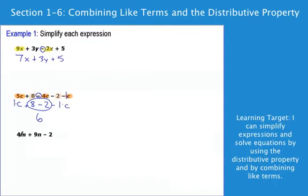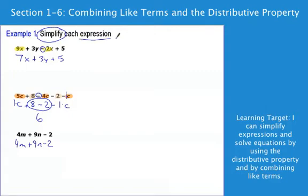Down here it's even faster — no like terms at all. The answer, if I'm going to simplify this, is 4m plus 9n minus 2. Notice on all these, we are simplifying each expression. These are not equations because there are no equal signs. The best I can do is simplify them — make them smaller or more condensed than they start out as.